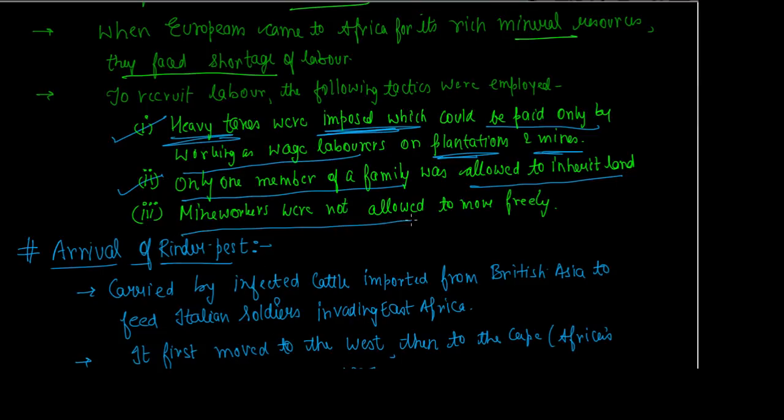Third, mine workers were not allowed to move freely. They were confined and not allowed free movement. As a result, they could not graze their cattle, which was their main livelihood. In this way, their main source of livelihood was taken away from them through these techniques.